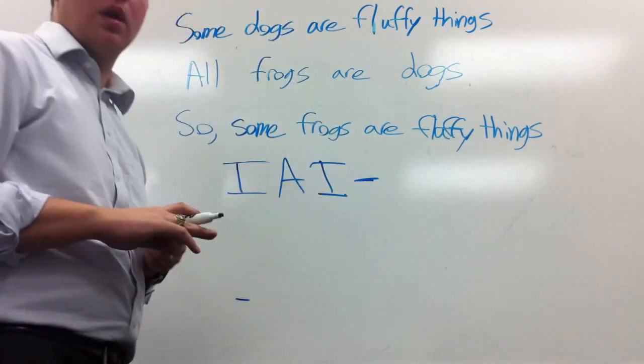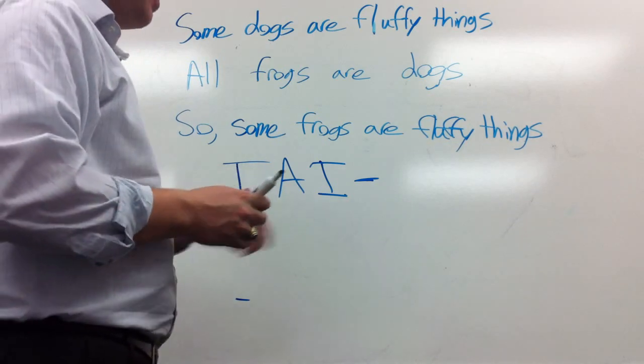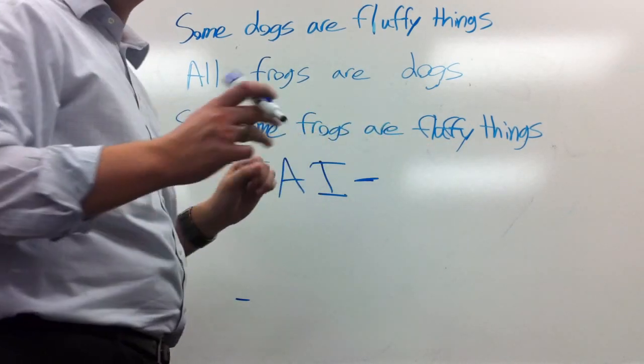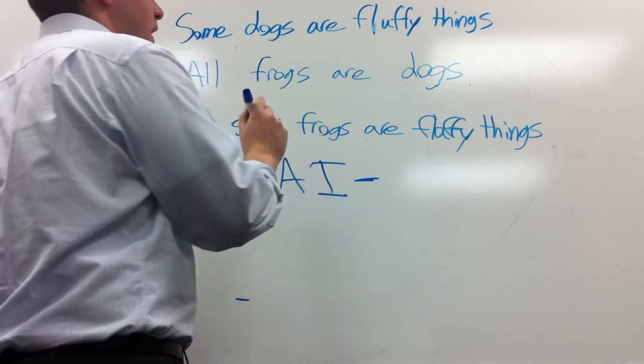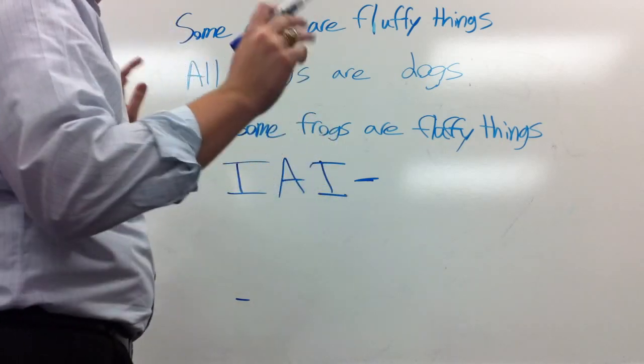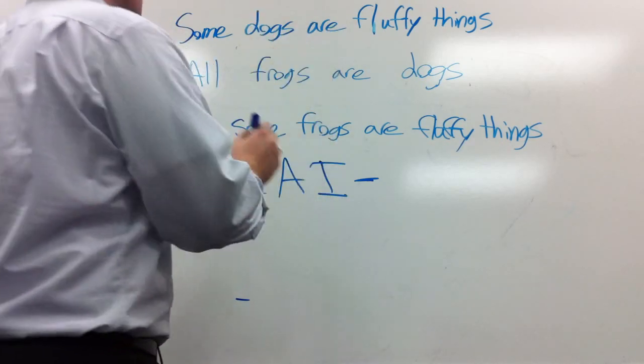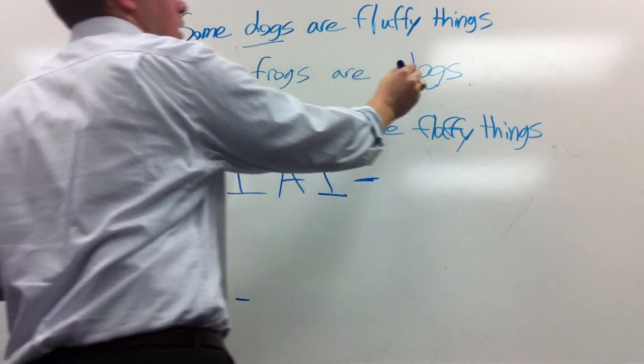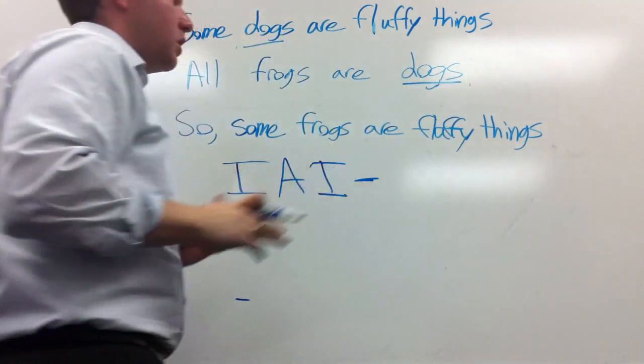Now we have to talk about the figure. So determining standard form, we talked about the major term and the minor term. There's another term, the middle term. And in this case, the middle term is the one that appears in both the premises. So in this case, that's dogs. So we're dealing with dogs here.